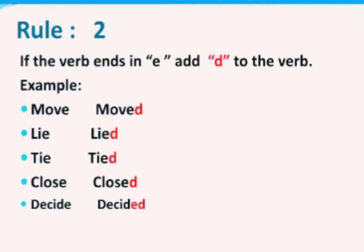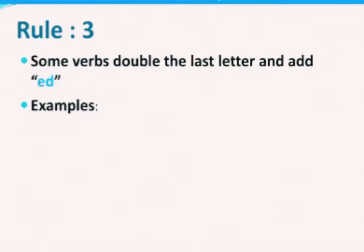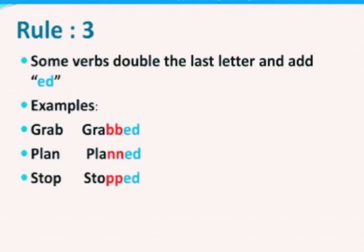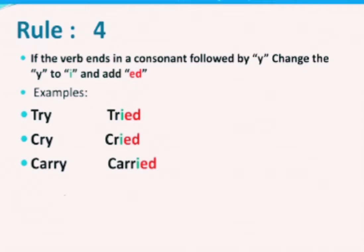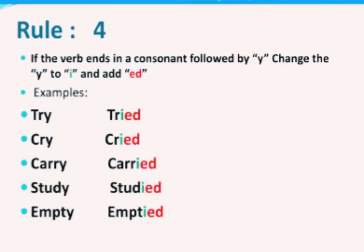The third rule is that some verbs double the last letter and add 'ed'. The second-to-last letter of these verbs is a consonant, so we double the last letter and add 'ed'. Examples: 'grab' becomes 'grabbed', 'plan' becomes 'planned', 'stop' becomes 'stopped', 'trip' becomes 'tripped'. The fourth rule is: if the verb ends in a consonant followed by 'y', change the 'y' to 'i' and add 'ed'. Examples: 'try' becomes 'tried', 'cry' becomes 'cried', 'carry' becomes 'carried', 'study' becomes 'studied', 'empty' becomes 'emptied'.